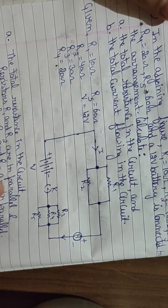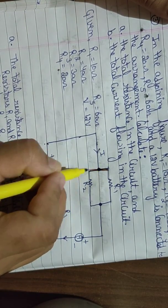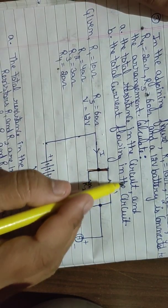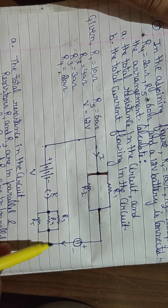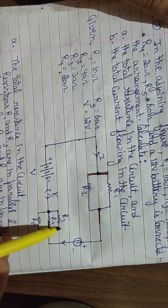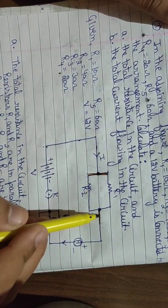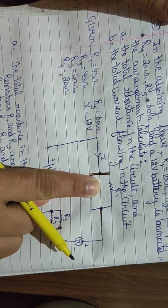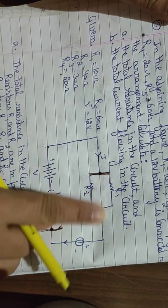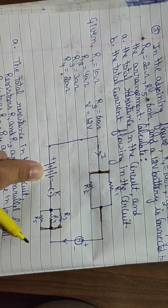Looking at the circuit diagram: from the positive terminal, current first encounters two different paths — meaning R1 and R2 are in parallel. Then after the ammeter, there are three separate paths — meaning R3, R4, R5 are in parallel. When we solve both parallel groups, each becomes a single equivalent resistor. Then those two equivalent resistors are in series with each other — only one path remains at the end.